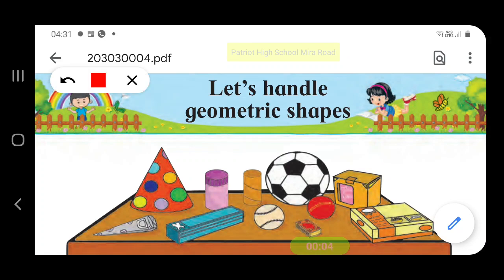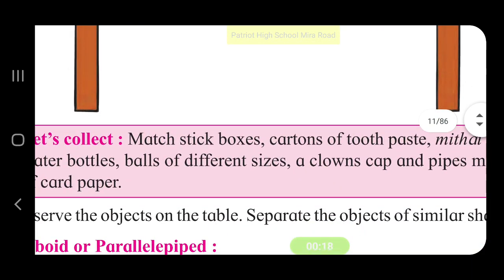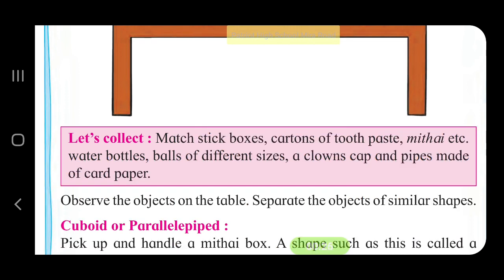Let's handle geometric shapes. To understand what shape objects are, you need to collect some items: matchstick boxes, cartons of toothpaste, a mithai box, water bottles, balls of different sizes, a clown cap, and pipes made of cardboard paper. You can keep all these objects on a table.